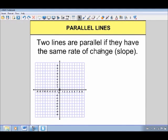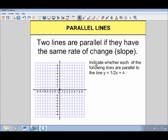All right, so two lines are parallel if they have the same rate of change, also called the slope. All right, sounds easy enough. And so let's look at some examples.